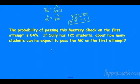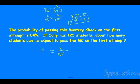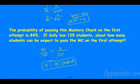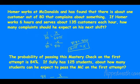The probability of passing this math check on the first attempt is 84%. If he has 125 students, about how many are going to pass on the first try? Well, 84% is the same as 84 over 100. Cross multiply and divide by 100, and you should end up with 105 students. So if he has 125 students total, he should expect about 105 of them to pass on the first try.